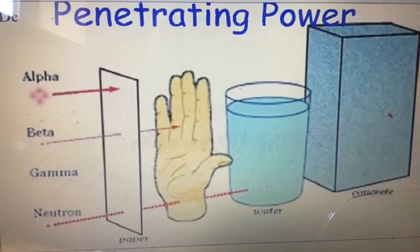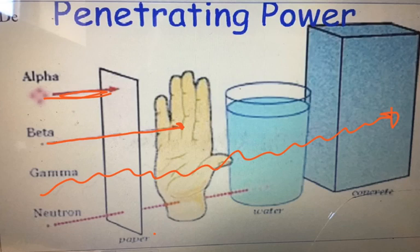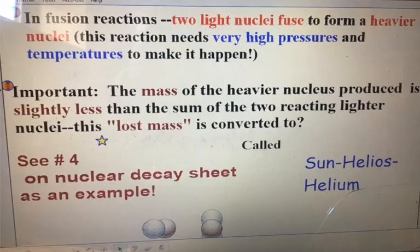Take this picture down also. This shows the penetrating power of these particles. Alpha particles are the bulkiest and are stopped by paper. Beta particles pass through paper and are stopped by human flesh. Gamma rays pass through all of those and are stopped by concrete — remember, very high frequency and very high energy. Neutrons are also shown here, stopped by water, but primarily you need to memorize alpha, beta, and gamma.